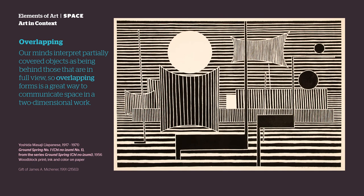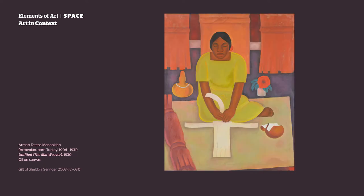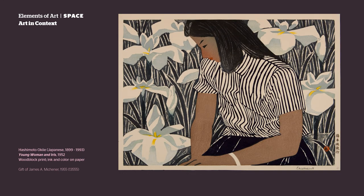Overlapping. Our minds interpret partially covered objects as being behind those that are in full view. So overlapping forms is a great way to communicate space in a two-dimensional work. Objects and figures in front overlap and block objects in back.